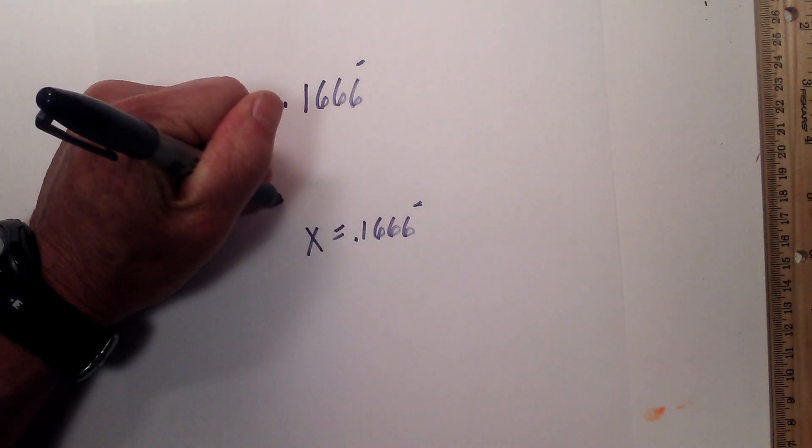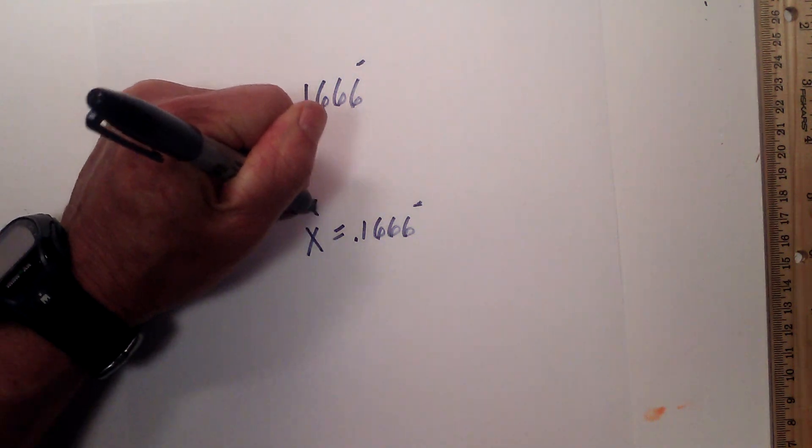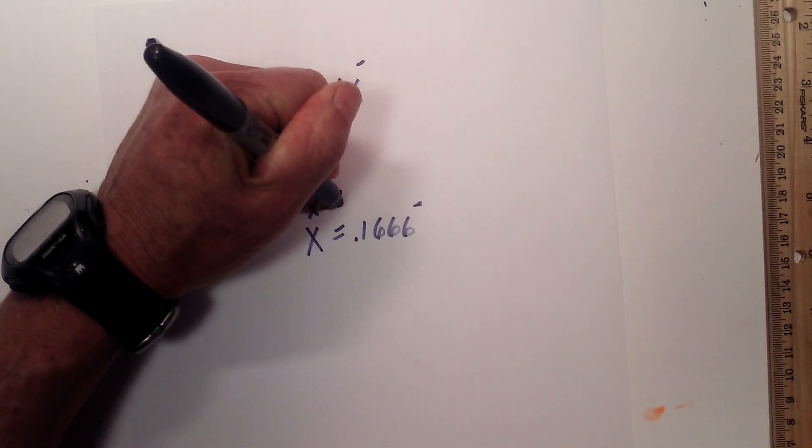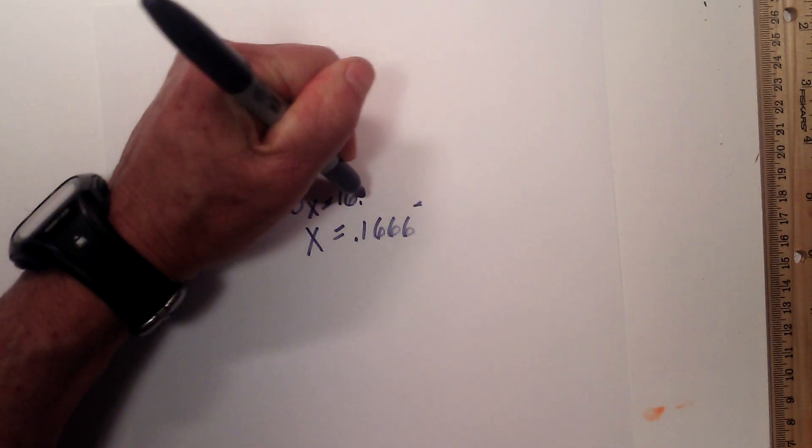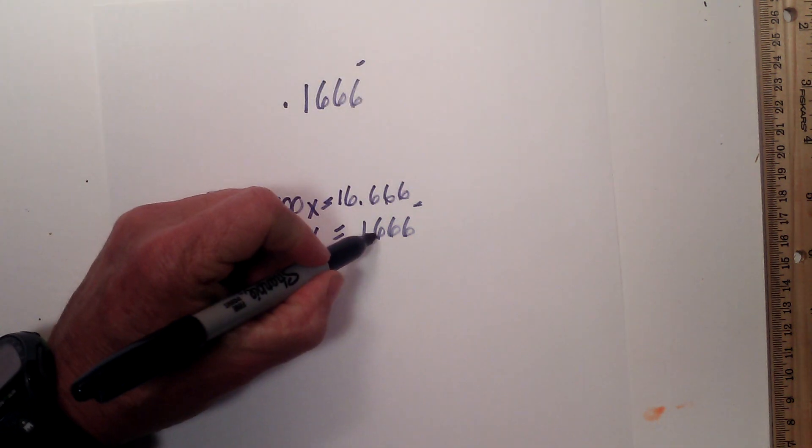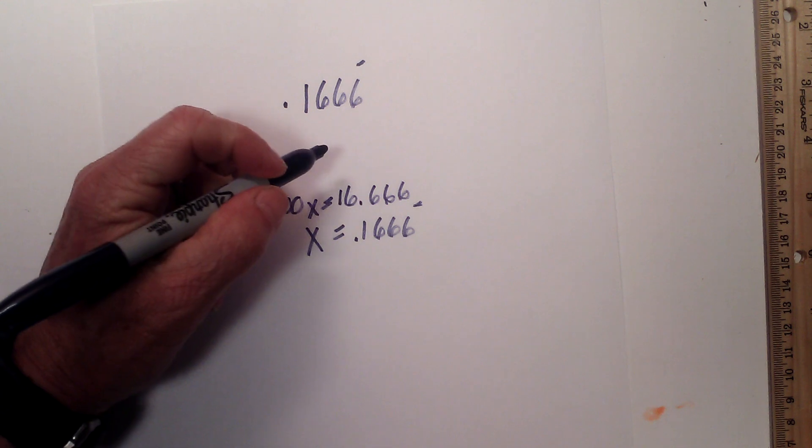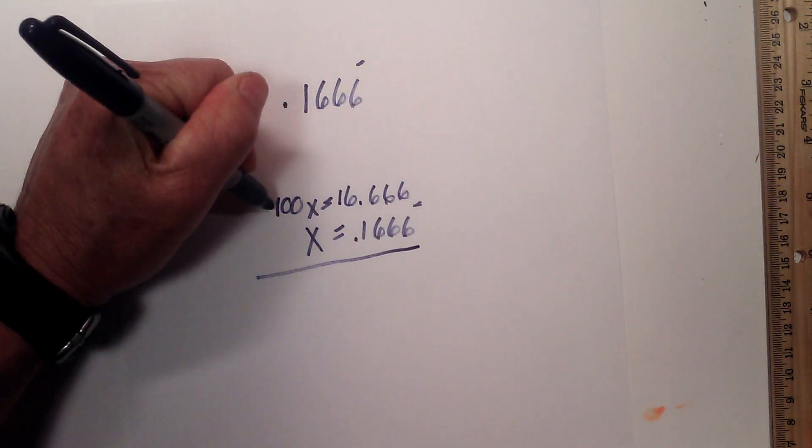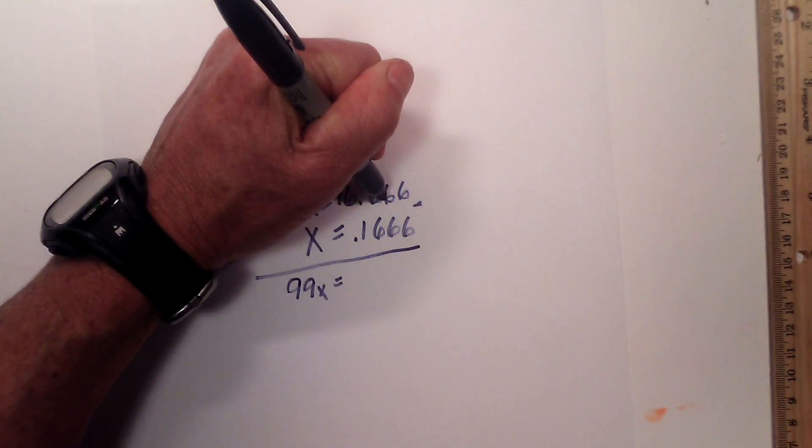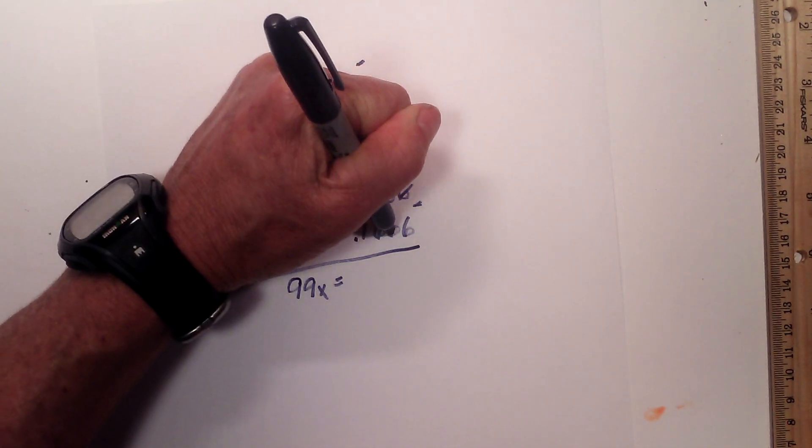And 666 is repeating. So we will move it 1, 2 places. So we will go, 100x is equal to, I am going to move it 2 places, 1, 2. So this becomes 16.6666, because I have moved the decimal 1 to right there. Now I subtract. 100 minus x is 99x is equal to, these 6's cancel.